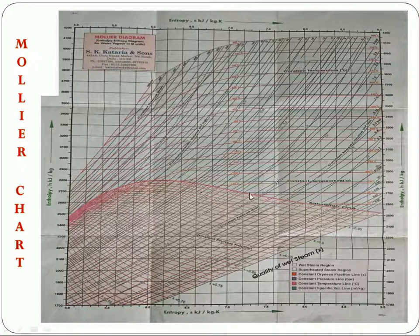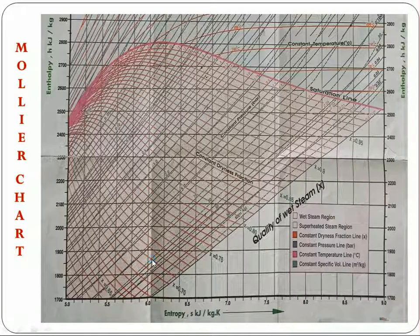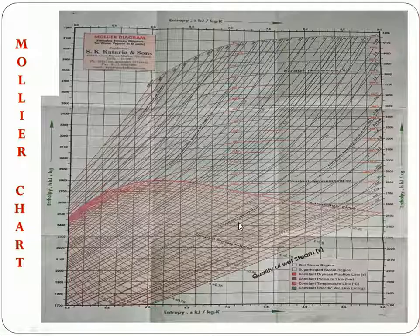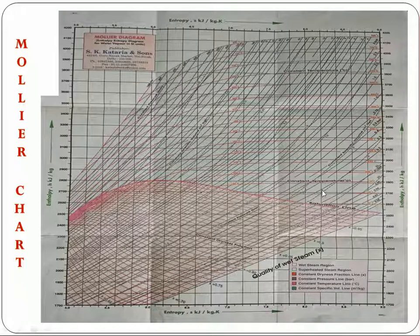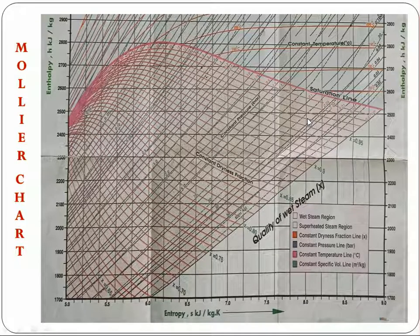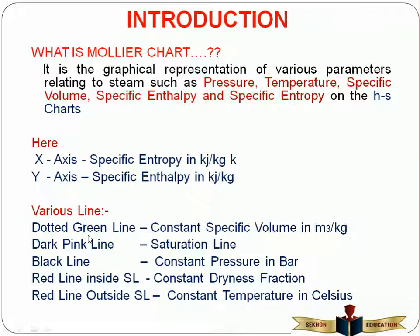There are certain colorful lines on this chart. There is a green line here. I mentioned that the dotted green line is the specific volume line — constant volume line. These are the green dotted lines. I will show you a little bit in the zoom version. These dotted lines are the constant volume lines, specific volume lines. These lines have units of cubic meters per kg.